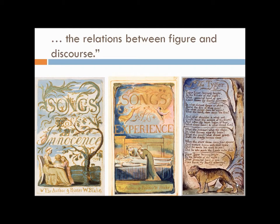You can see, for example, in the first image — that's the cover to the Songs of Innocence — how the text kind of grows from the image. The same with the second one, and with some parts of the Tiger poem.